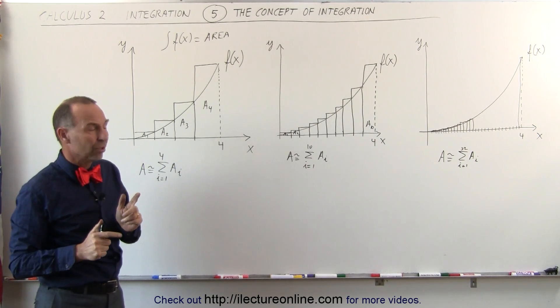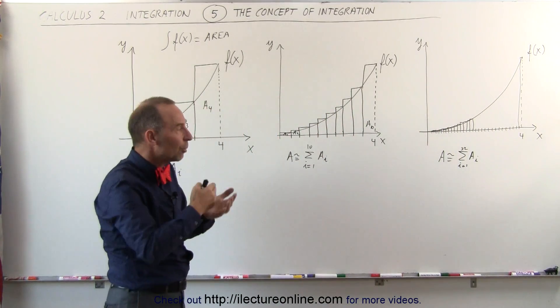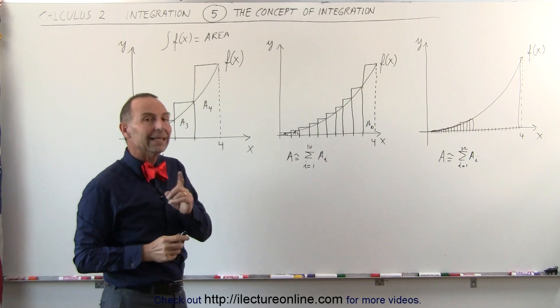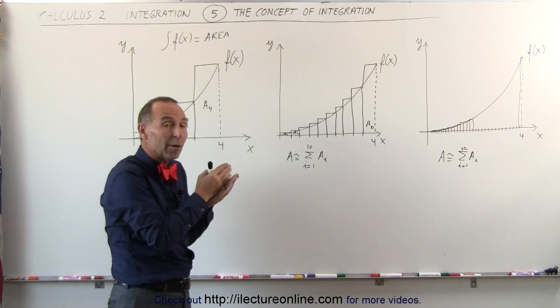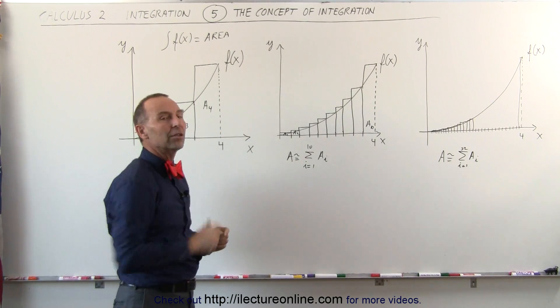In essence, when we go to an infinite number of areas, if I let the number of areas go up to a billion, a trillion, a quadrillion, then in the end, as it goes to infinity, the area added up for each of the rectangles will exactly equal that area underneath the curve.